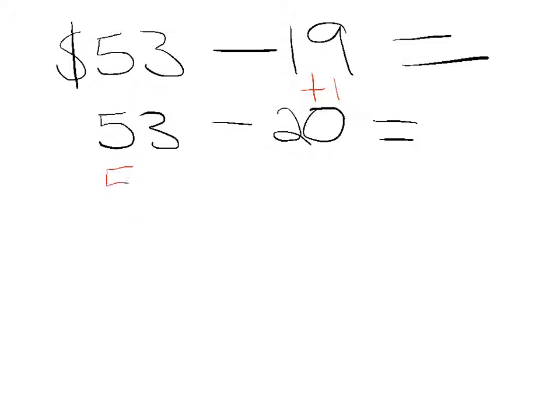So then we go 53, oh sorry, the answer to that is 33. And then the last step, so we've made the tidy number, compensated. The last step is to go 33 plus 1. And the reason it's plus 1 is because we added the 1 there, which equals 34.